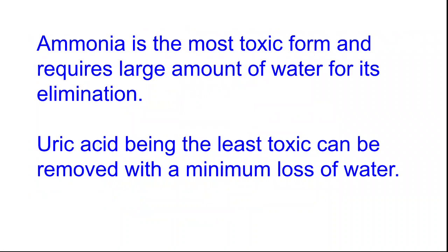Ammonia is the most toxic form and requires a large amount of water for its elimination, as it is easily dissolved in water. Uric acid, being the least toxic, can be removed with a minimum loss of water, so water can be conserved.